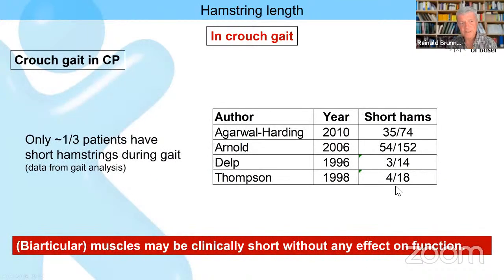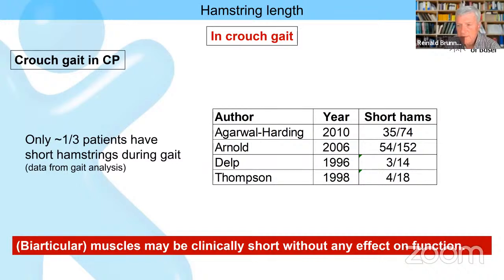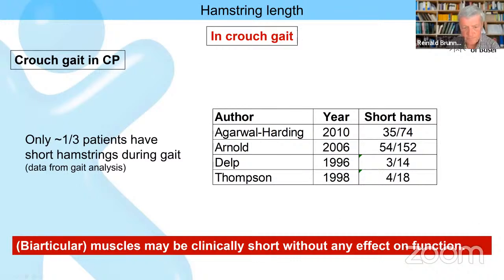Several studies have shown that about one third of patients have short hamstrings; all others have normally long or long hamstrings. So we are misled by the concept that hamstrings flex the knee — they far more have an interplay with the knee extensors and work as extensors in the legs. Biarticular muscles may be short without having an effect on function, and we need to prevent the need for overuse of muscles.